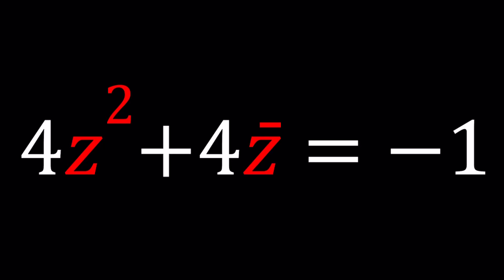Hello everyone, welcome to A plus B I. This channel is all about complex numbers and in this video we're going to be solving a quadratic equation. We have 4z² + 4z̄, which is the complex conjugate of z, equals -1, and we're going to be solving for z values.